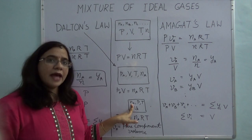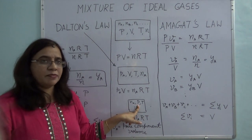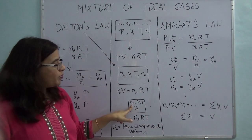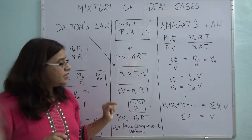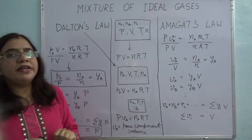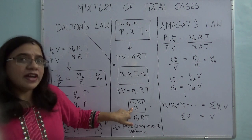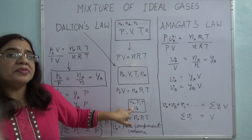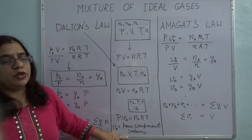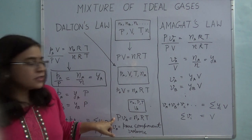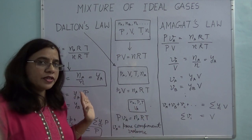Again, I am taking component A alone with Na moles. Now I am keeping this Na at the same pressure and temperature as the mixture. In order to exert the same pressure, the volume will be different. So I have component A alone at mixture pressure P and temperature T, and I find out the volume it occupies — I call that the pure component volume. Since A is an ideal gas, I write: P × Va = Na·RT.